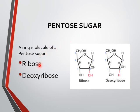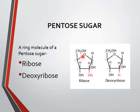Number one is ribose and number two is deoxyribose. This is the structure of ribose in which we have five carbons — one, two, three, four, and five — and we are having the groups OH, OH, OH, OH, and OH at each carbon position.